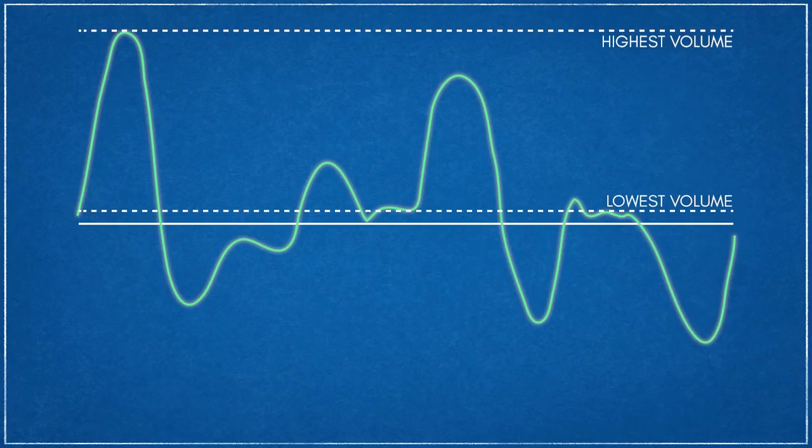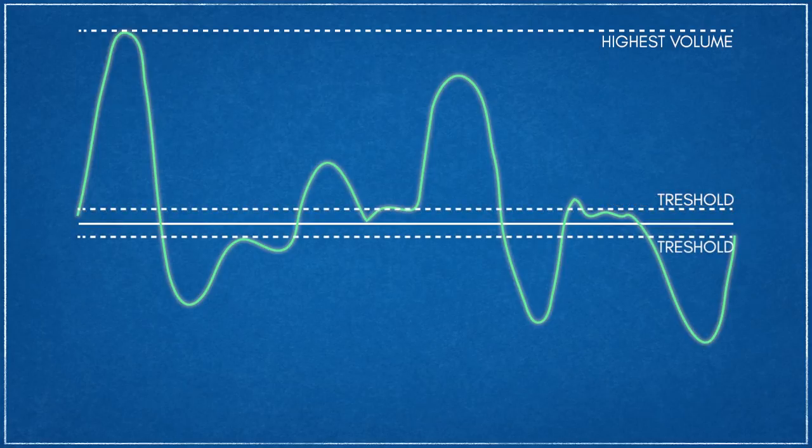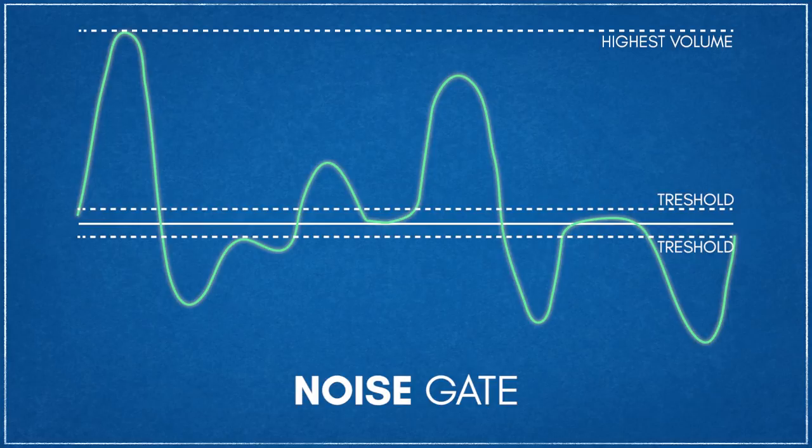Complementing compressors are audio expanders. They increase the dynamic range of the audio signal. Expanders are generally used to make quiet sounds even quieter by reducing the level of an audio signal that falls below a set threshold. This is sometimes configured as a noise gate, a processing technique that aims to filter out a baseline level of noise from a signal.